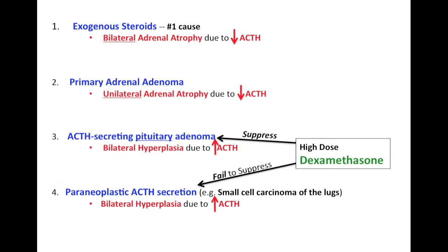A way to remember this is that small cell carcinoma of the lungs, compared to pituitary adenoma, is a lot worse. So it's a lot harder to control small cell carcinoma of the lungs than it is to control a pituitary adenoma. That's one way you can think about it.